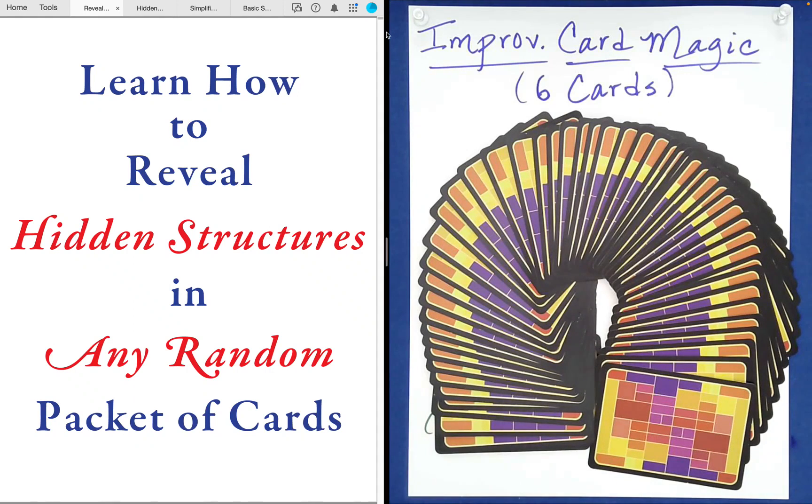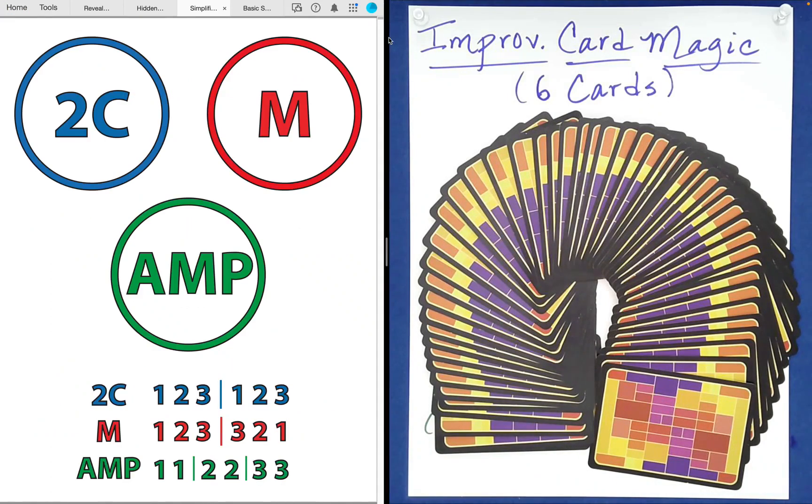So let me bring up those three structure types. The first one is a two cycle structure abbreviated 2C. The second one is a mirrored structure abbreviated by the letter M, and the last one is an AMP and that stands for adjacent mirrored pairs. Now as in the first part of this series at the bottom of the screen you'll see simplified examples of each of these three structure types.